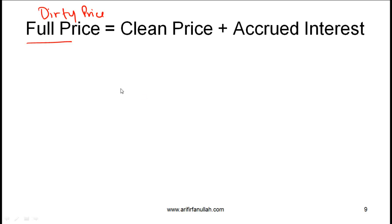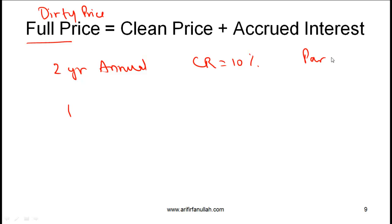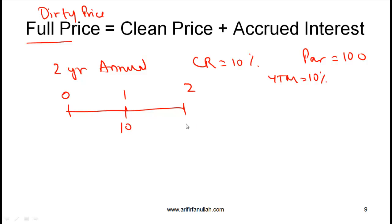Let me explain this with a very simple example and then work on a slightly more complicated example. Let's say that we are talking about a two-year annual pay bond with a coupon rate equal to 10%, a par value equal to 100, and a YTM also equal to 10%. The cash flows are $10 at time 1 and $110 at time 2. Since the coupon rate equals the YTM, this bond is issued at par, so the issue price is equal to 100.